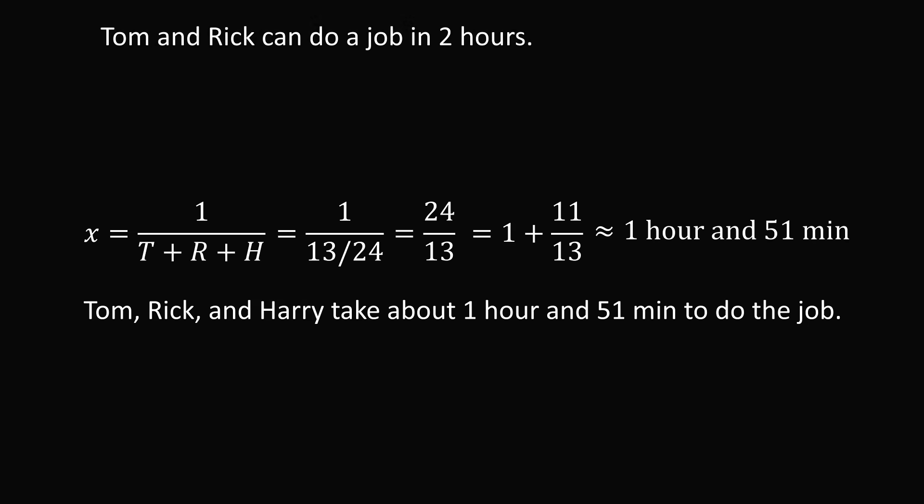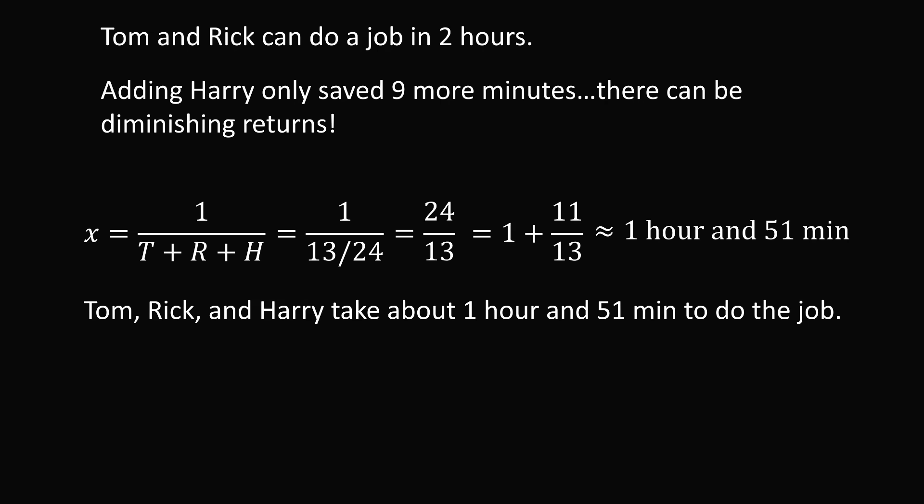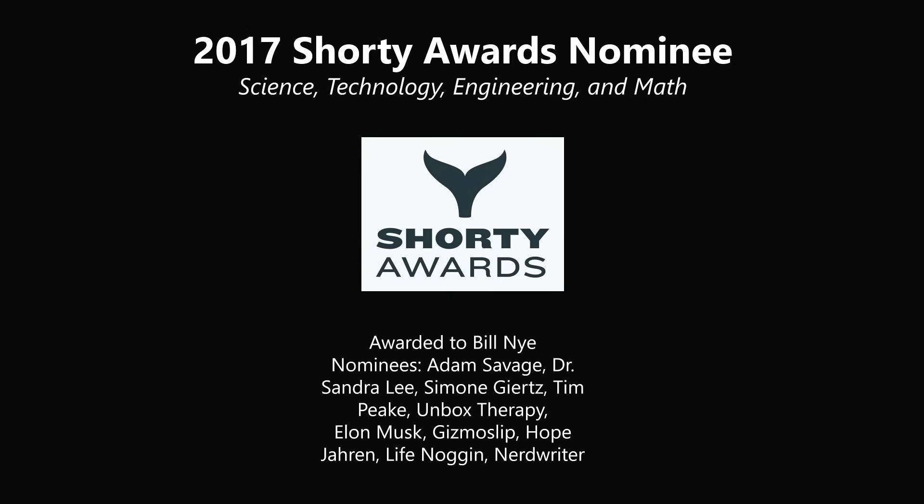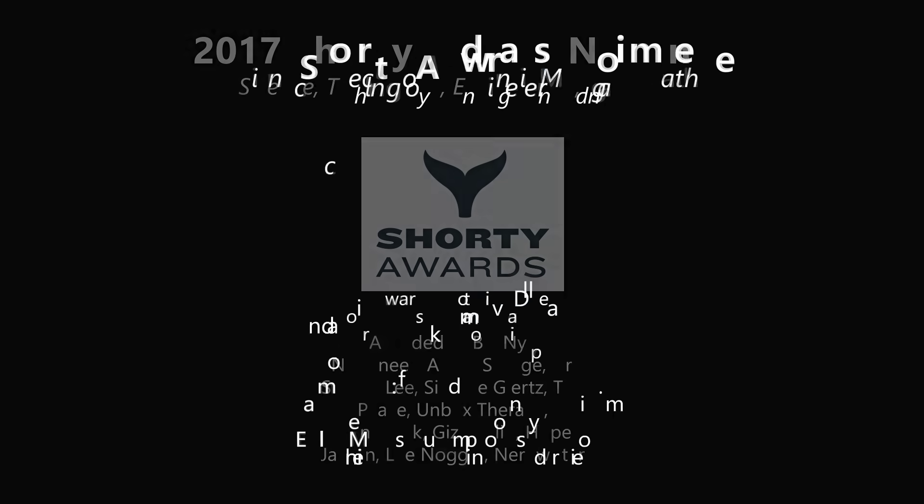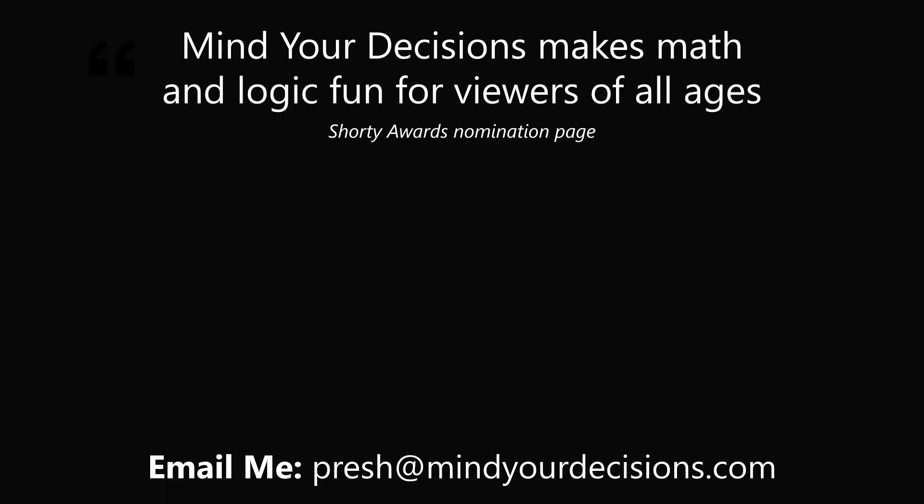And this does make sense. Because Tom and Rick can do the job in 2 hours, adding Harry takes less time. You'll notice that adding Harry has only improved their speed and saved them 9 minutes more — there can be diminishing returns to adding more people to a job. But that is how you solve this very interesting puzzle that most US college students find difficult. Thanks for making us one of the best communities on YouTube. See you next episode of Mind Your Decisions, where we solve the world's problems one video at a time.